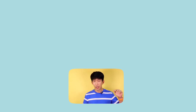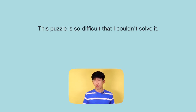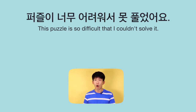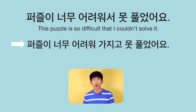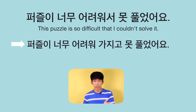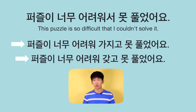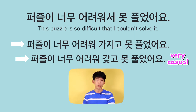Here are more examples. 'This puzzle is so difficult that I couldn't solve it' — 퍼즐이 너무 어려워서 못 풀었어요 — changes to 퍼즐이 너무 어려워 가지고 못 풀었어요. 가지고 is absolutely acceptable here. But if you change it to 퍼즐이 너무 어려워 갖고 못 풀었어요, it becomes way more casual, and I don't recommend that you use it yourself.